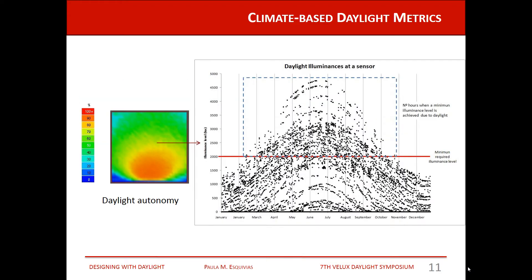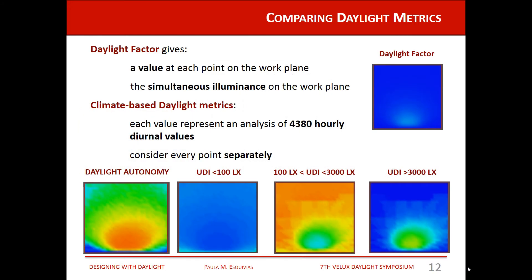What we have to bear in mind when viewing a false color map of a climate-based daylight metric is that we are not seeing illuminances directly — we are seeing a value that represents a group of illuminances. Since each point is treated separately, we cannot know if illuminances occur simultaneously at different points across the work plane.